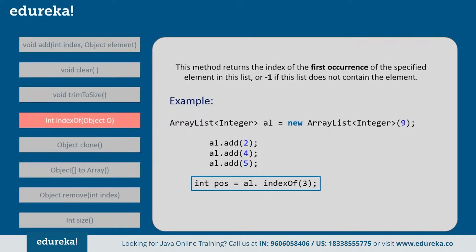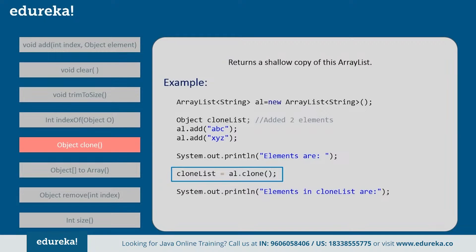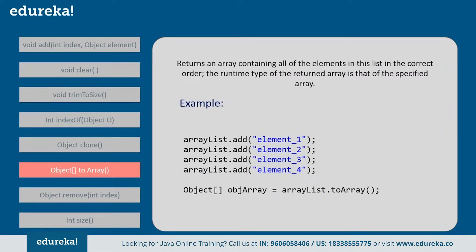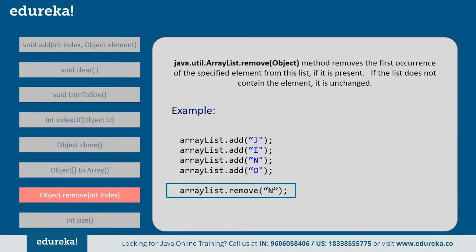Next, clone(): this method is used to return a copy of the ArrayList. On calling this method, it clones the entire ArrayList. For example, if you have two elements in the array and clone it, after cloning the list it returns all elements present in the ArrayList. Next, toArray(): this method returns an array containing all the elements in the list in the current order. Next, the remove() method: this method removes the first occurrence of a specified element from the list if it is present.